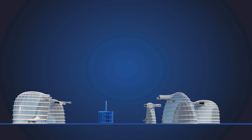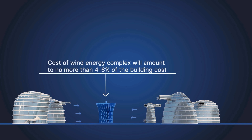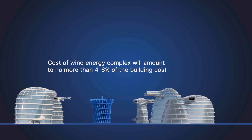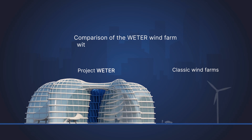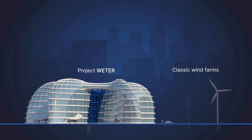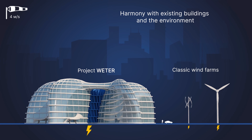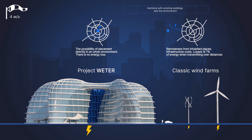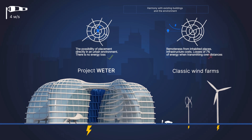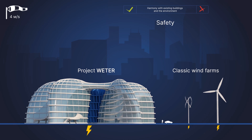The cost of the wind energy complex will amount to no more than 4–6% of the building cost. Here is a comparison of this wind farm with wind farms of the classic type: harmony with existing buildings and the environment, the possibility of placement directly in an urban environment, there is no energy loss from remoteness from inhabited places, no infrastructure costs, versus losses of 7% of energy when transmitting over distances.